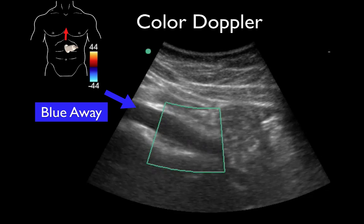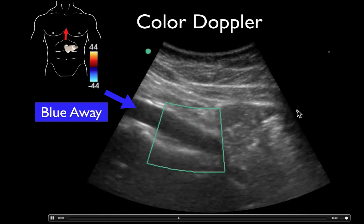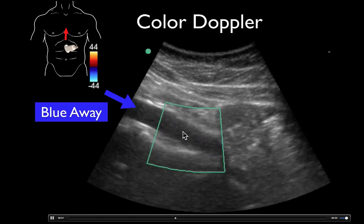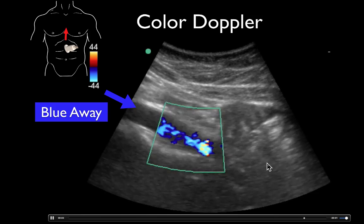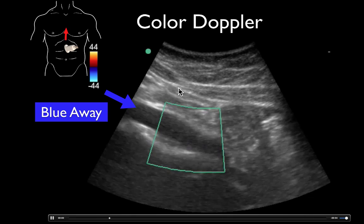Here we're scanning over a patient's abdomen, looking at the aorta. Notice the probe marker is toward the patient's head, angled down toward the pelvis — that's why we get the slanted view of the aorta. The blood flow is traveling deep and away from the probe at this angle, so we get the blue color. It's important to remember that red and blue have nothing to do with which vessel it is — they only indicate the direction of flow relative to the probe. These machines cannot tell you what vessel you're looking at, so don't assume that.